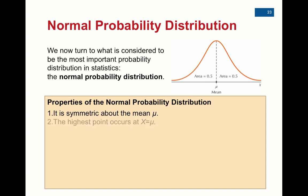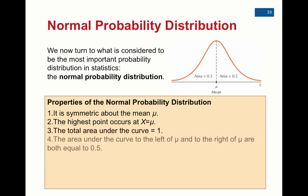It is symmetric about the mean. In other words, it means that the mean is in the middle of the bell curve. The highest point occurs at the mean. You can see that from the picture. The total area under the curve is one. And so then if the area under the curve is one and the mean is in the middle, then the area to the left of the mean must be 0.5, and the area to the right of the mean must be 0.5.